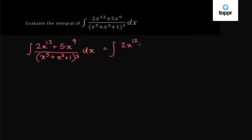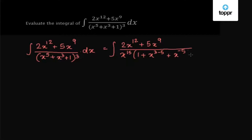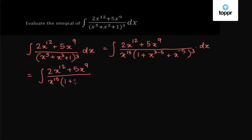So we have 2x to the power 12 plus 5x to the power 9 upon x to the power 15. Inside the bracket we have 1 plus x to the power minus 2 plus x to the power minus 5, whole cube, into dx. This equals the integration of 2x to the power 12 plus 5x to the power 9 upon x to the power 15 into 1 plus x to the power minus 2 plus x to the power minus 5, whole cube, into dx.